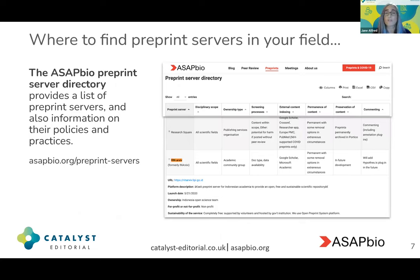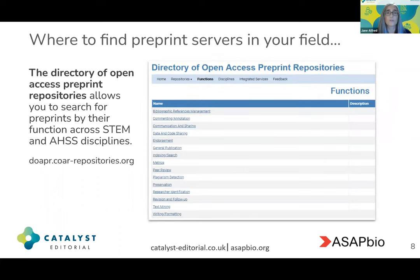Where can you find preprint servers in your fields? We recommend going to the ASAP Bio preprint server directory, which provides a list of preprint servers and also information on their policies and practices. Go to ASAP Bio's preprint server directory and find preprints relevant to your field. You can also go to the directory of open access preprint repositories, which covers preprints across STEM and arts, humanities and social sciences disciplines, and allows you to search for preprints by their function.